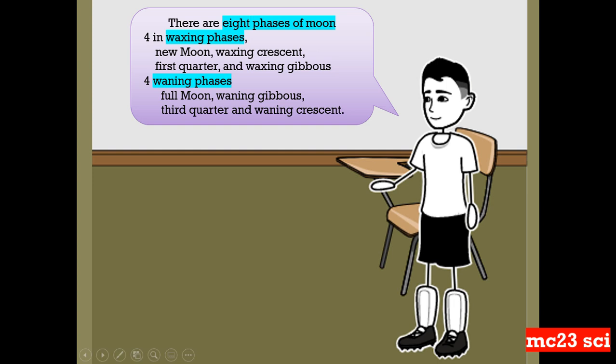There are 8 phases of moon. 4 in waxing phases: the new moon, waxing crescent, the first quarter, and the waxing gibbous. And also 4 in the waning phases, which is the full moon, waning gibbous, third quarter, and the waning crescent.